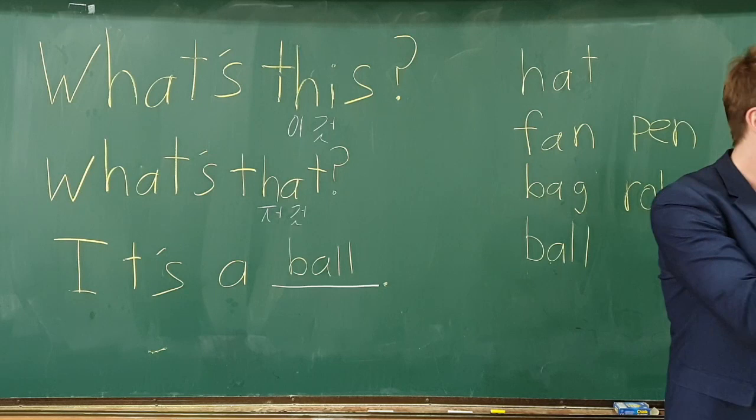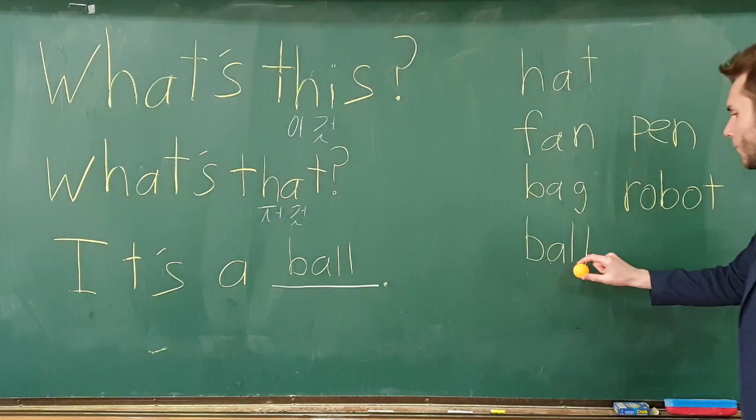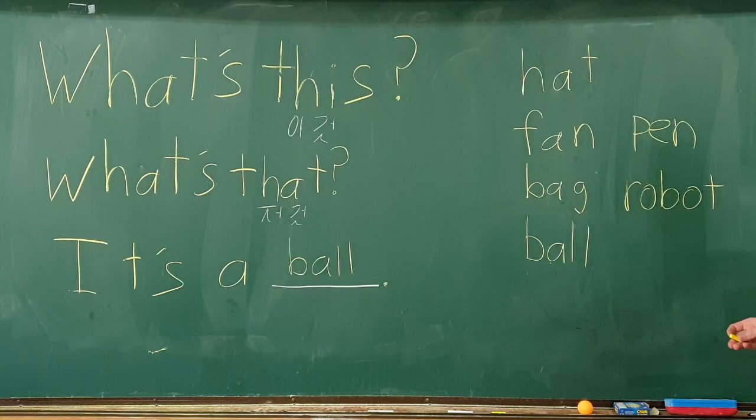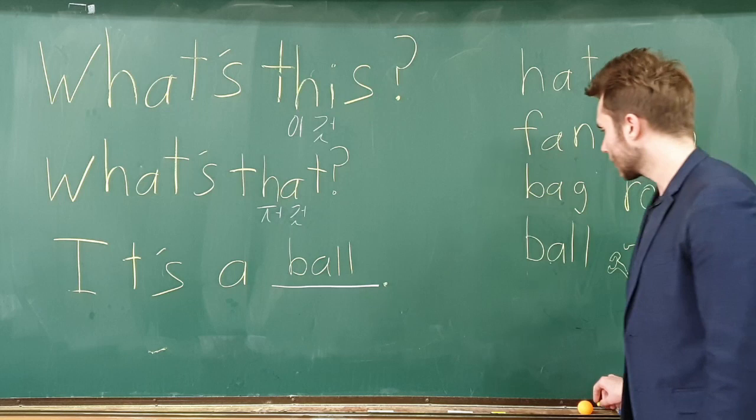Next we have ball. I have right here a ping pong ball. We have ball, it's a ball. Pen, right here I've got a pen. And robot. Now that I don't have, I'll just draw a robot.